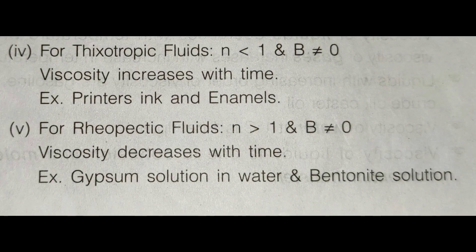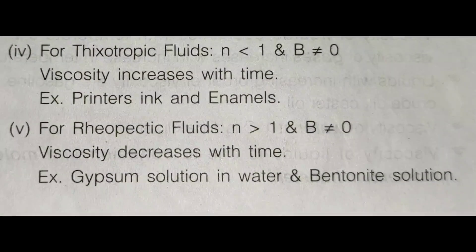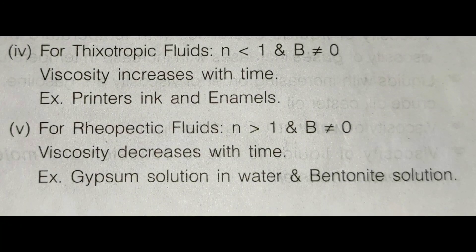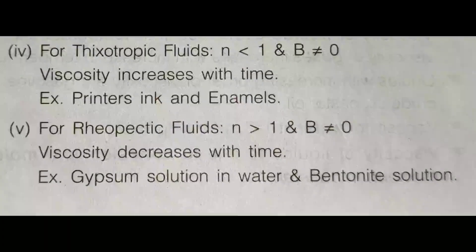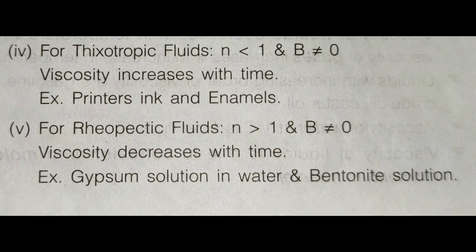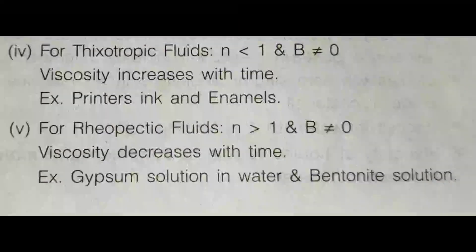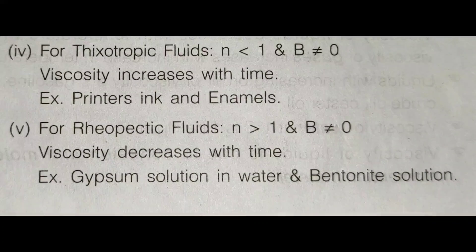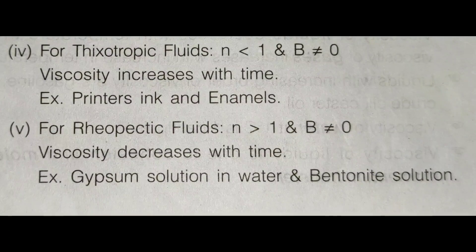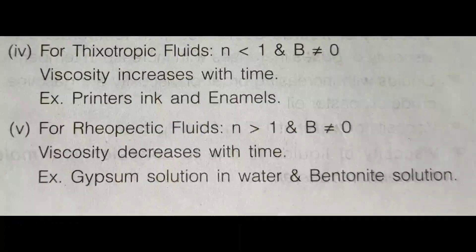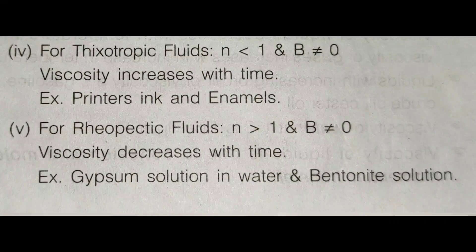For thixotropic fluids, n is less than 1 and B is not equal to 0; viscosity increases with time. Examples of thixotropic fluids include gypsum solution and bentonite solution.